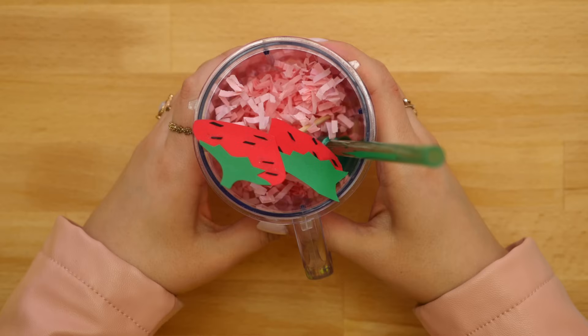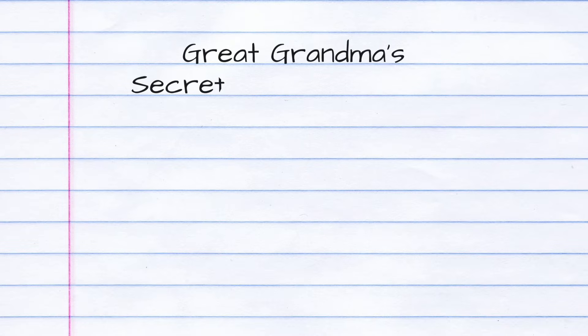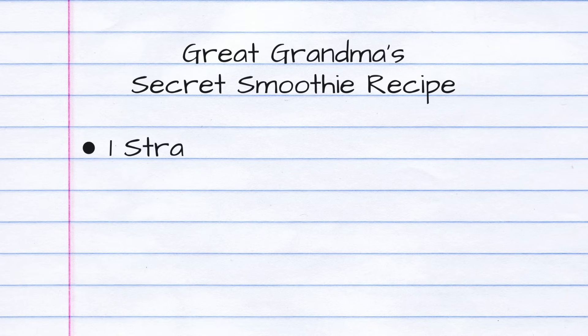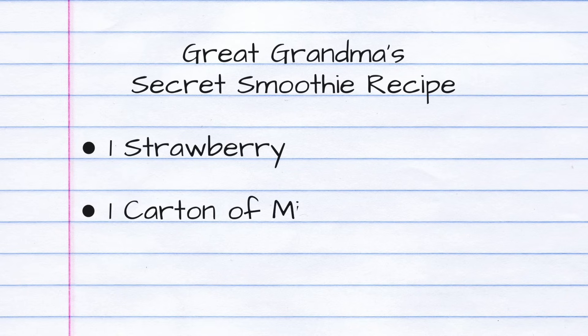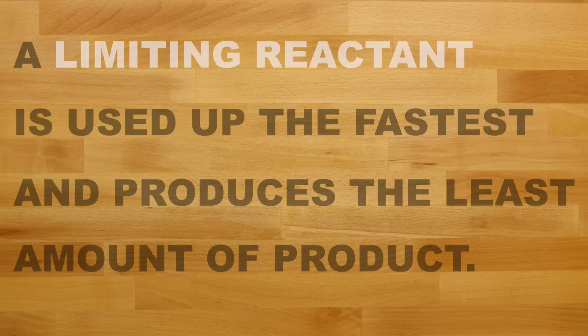So our strawberry smoothie will act as our product. Now to make a strawberry smoothie, this recipe calls for one strawberry and one carton of milk. A limiting reactant is going to be the reactant that is used up the fastest, and it will produce the least amount of product. So let's see which ingredient or which reactant will be used up the fastest.